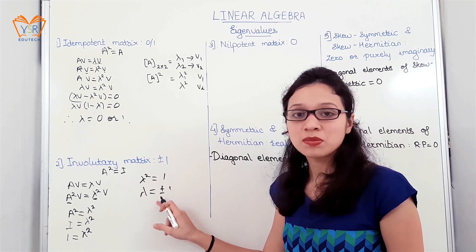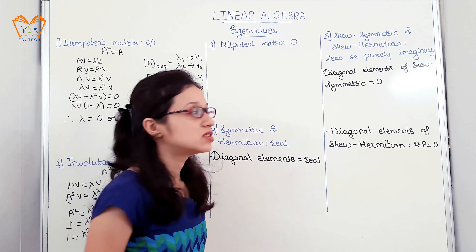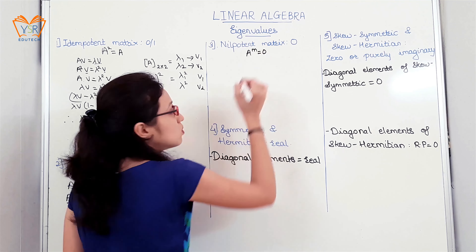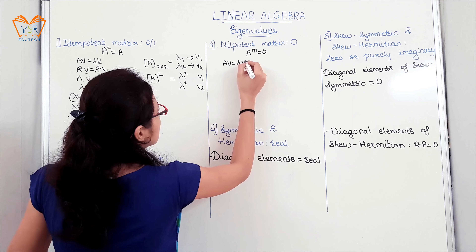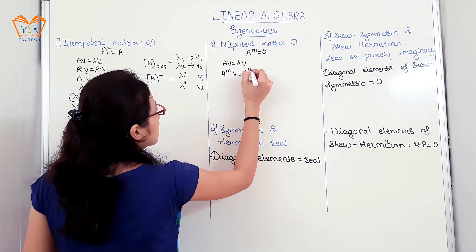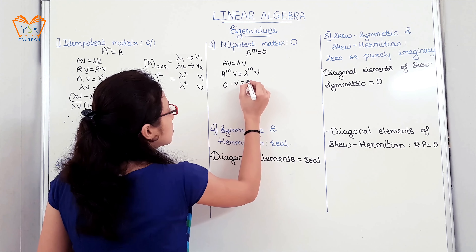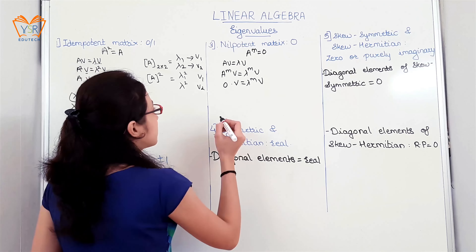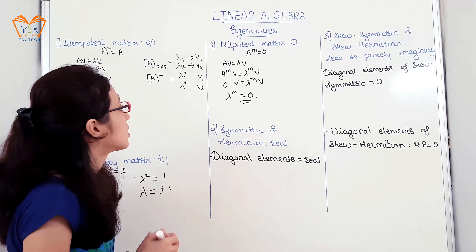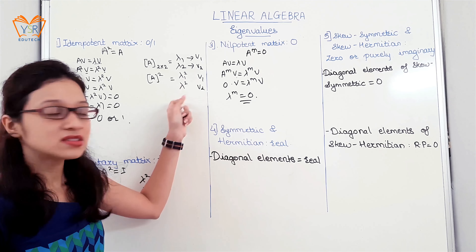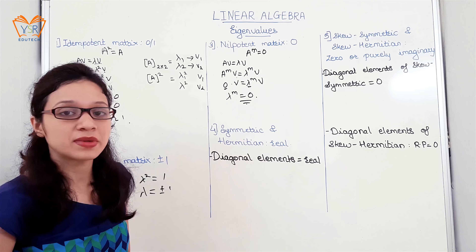So the eigenvalues for an involutory matrix are ±1. Third, the nilpotent matrix — the eigenvalue for a nilpotent matrix is 0. It is defined as A raised to m equals 0, where m is any positive integer. Then A raised to m times v equals λ raised to m times v. Since A raised to m equals 0, we get λ raised to m equals 0, and since eigenvectors are not 0, we conclude λ raised to m equals 0, so the eigenvalues for a nilpotent matrix are 0.